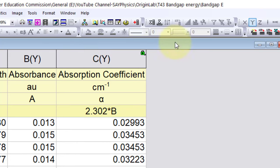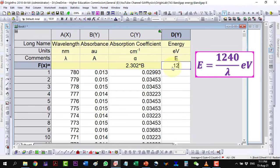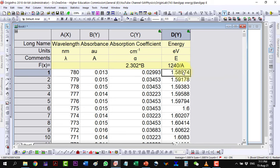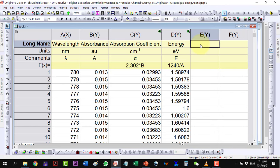To calculate the energy h nu, we add another column. Now, we will add a couple of columns to find alpha h nu power 1/2 and alpha h nu power 2.